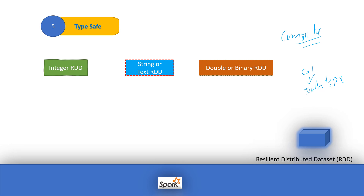To summarize the RDD features: first, resilient — we cannot lose data. Second, distribution — we can process large numbers of datasets. Third, type-safe — at compile time it understands data types. Fourth, lazy evaluation — saves money and CPU time. Fifth, it can process structured, unstructured, and semi-structured data. These are the features that help process big data in the current world.